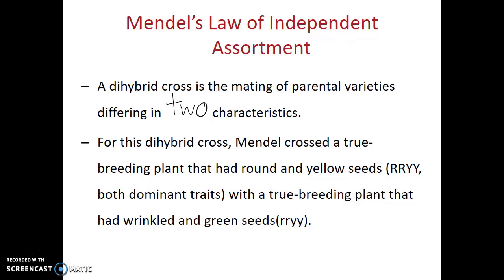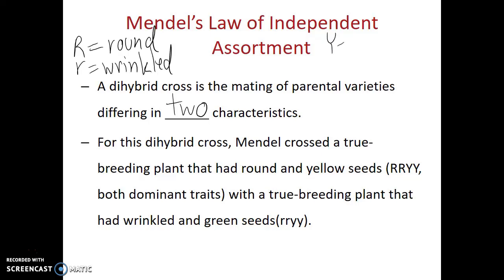For this dihybrid cross, Gregor Mendel crossed a true breeding plant that had round and yellow seeds — both dominant traits — with a true breeding plant that had wrinkled and green seeds, two recessive traits. Capital R is the dominant allele for round seeds, whereas little r is the recessive allele for wrinkled seeds. Capital Y is the dominant allele for yellow seeds, and little y is the recessive allele for green seeds.